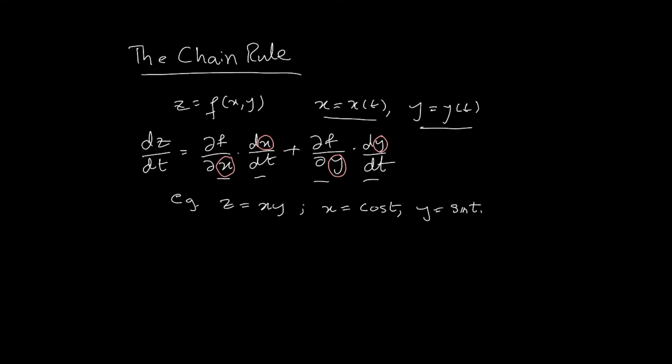Here's the example: z = xy, where x = cos(t) and y = sin(t). Finding partial z with respect to x or y is straightforward and doesn't require the chain rule. The interesting question is: what is dz/dt? Well, dz/dt is given by the chain rule formula we just saw, so we need the ingredients: ∂f/∂x, dx/dt, ∂f/∂y, and dy/dt.